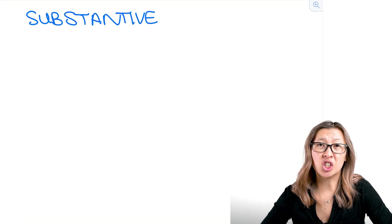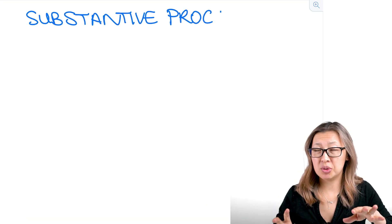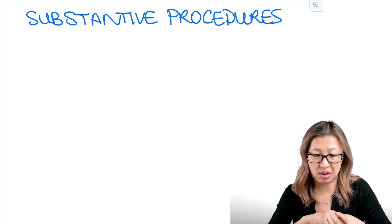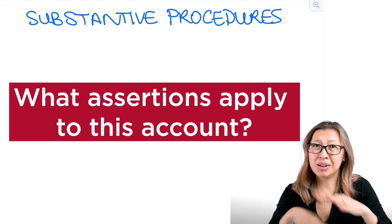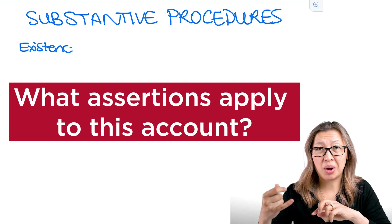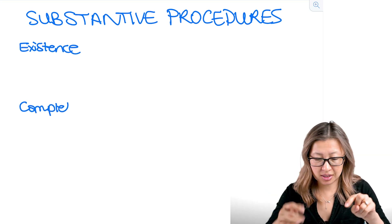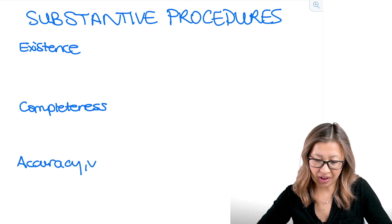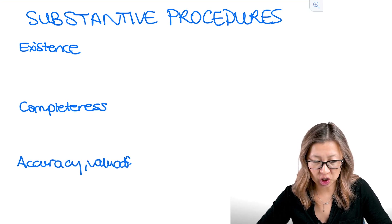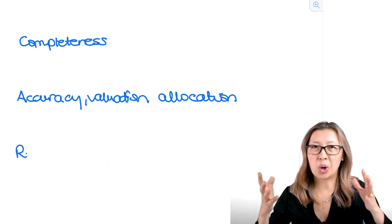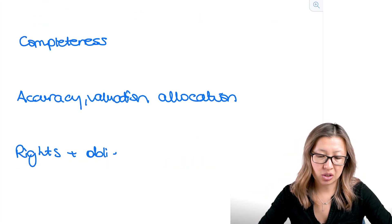When it comes to substantive procedures, the first thing we need to do is think about accounts payable and what assertions are going to be at risk. I'm going to start by writing out the assertions: existence, completeness, accuracy, valuation, allocation, and rights and obligations. We always start with the assertions — that's always easiest.